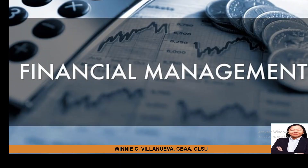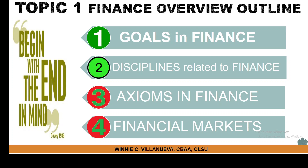We are going to discuss in financial management the related disciplines. What we had already in our material are the goals in finance and the actions in finance. We are going to discuss the second one, which is disciplines related to finance, and the last item will be financial market, which is directly related to chapter two of your text. The first three items discussed, numbers one to three, are all presented in your chapter one — it's merely an expanded version.